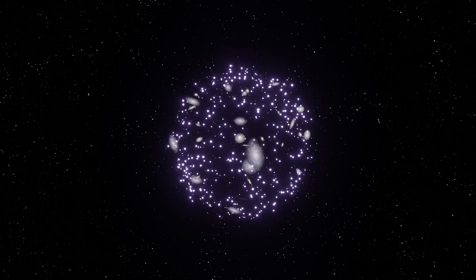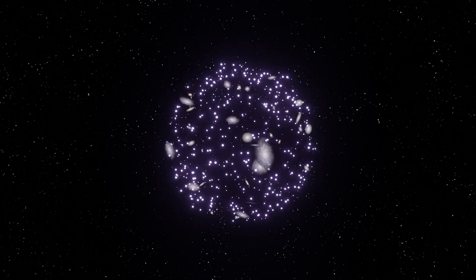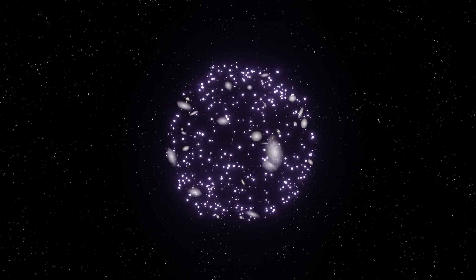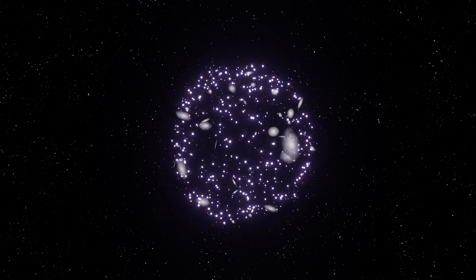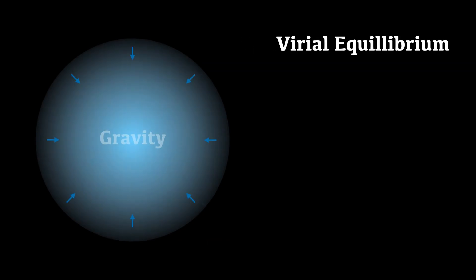During the process of virialization, the galaxies and dark matter particles move around in the formation and evolution of a galaxy cluster. They exchange energy through gravitational interactions. And as a result of this, the velocities of the galaxies and the internal pressure of the dark matter increase. This increased kinetic energy counteracts the gravitational pull, leading to a balance between inward and outward forces. Eventually, this will reach a state of equilibrium known as virialization.